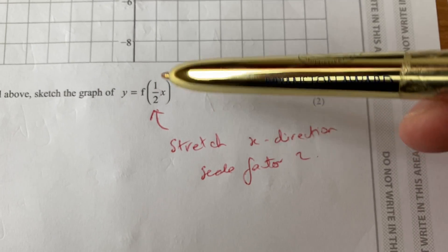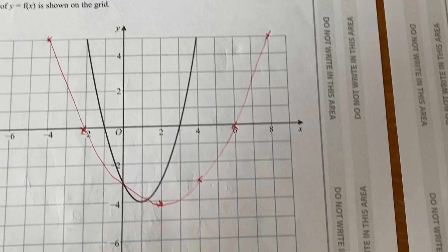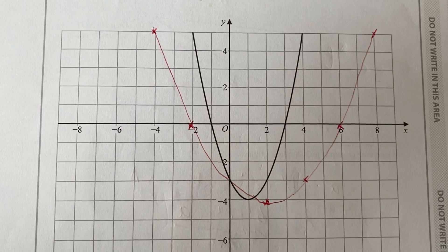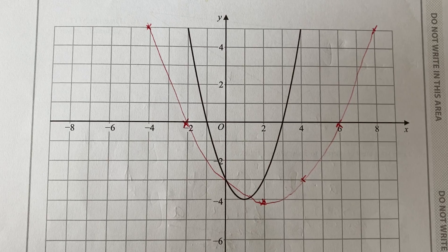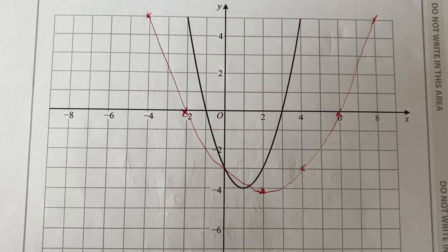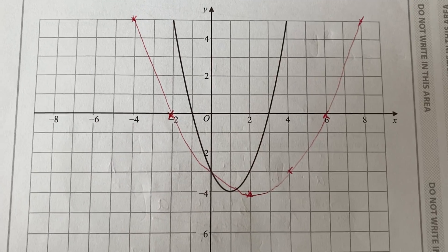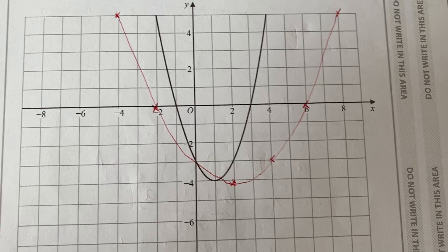The scale factor is inside the bracket with the x, so what that means is that it's like stretching it out from the y-axis, but we're doing it with scale factor of 2, so it's going to be doubling all of the distances from the y-axis that are there originally.